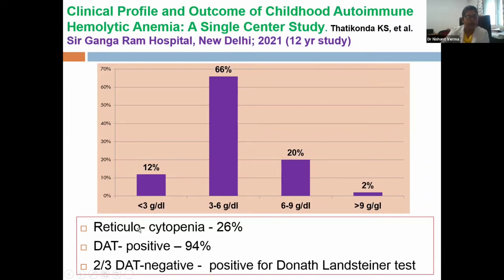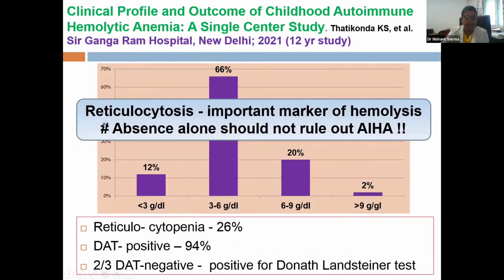The Ganga Ram Hospital cohort had reticulocytopenia in 26 percent of cases, yet DAT was positive in about 94 percent. This highlights that absence of reticulocytosis should not rule out autoimmune hemolytic anemia, despite it being an important marker of hemolysis.